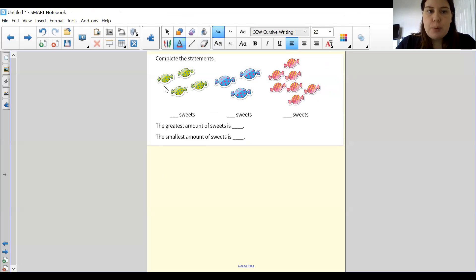So if I look at the first one, I have one, two, three, four. So all I'm going to do is write four sweets. Now the blue sweets, one, two, three. So I'm going to write the number three.